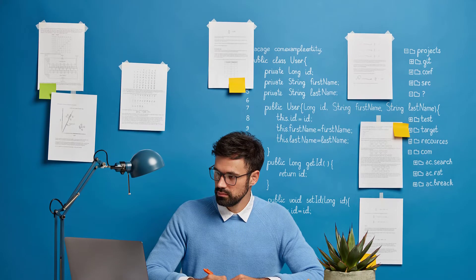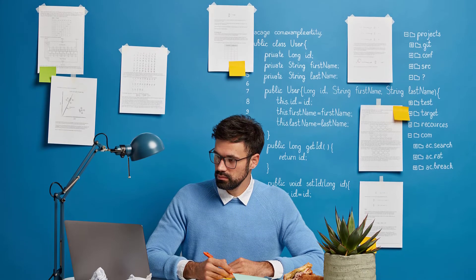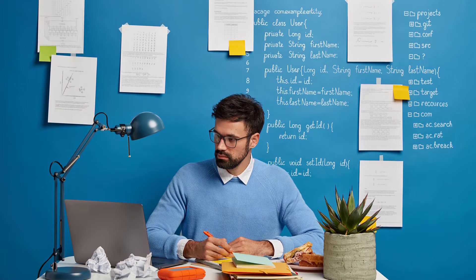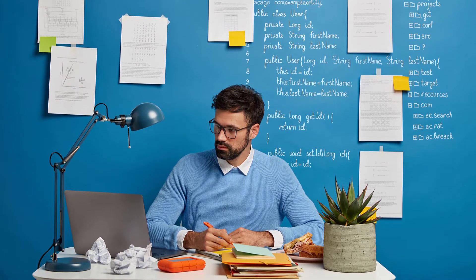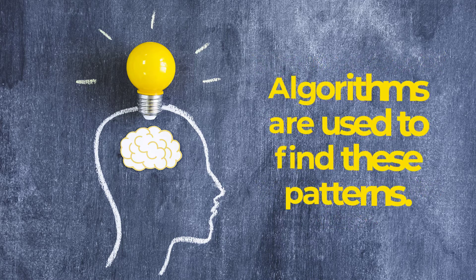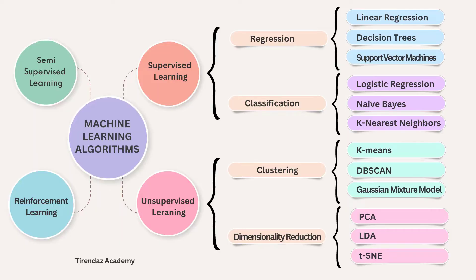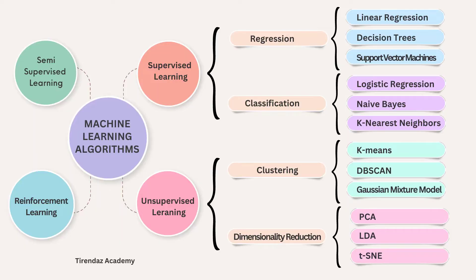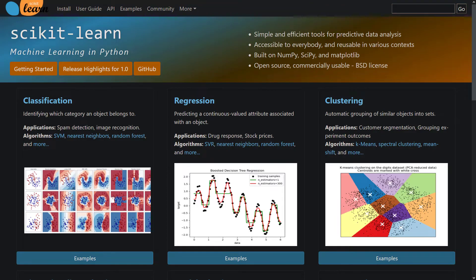After learning the basics of data science, you should learn machine learning algorithms to extract hidden information in data. The purpose of machine learning is to find hidden patterns in the data, and algorithms are used to find these patterns. It is recommended to start with simple algorithms such as linear regression, then try more complex algorithms such as neural networks to get better models. For machine learning algorithms, scikit-learn is king.